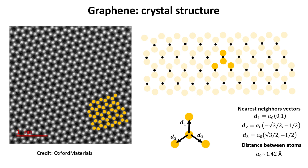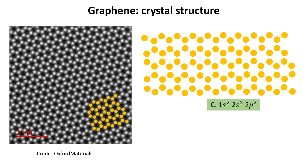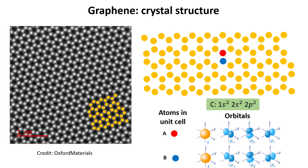The next step is to study the character of the orbitals involved in the construction of Bloch states for traveling electrons in graphene. The electronic configuration of each carbon atom is highlighted in the green box. The valence electrons occupy two s and two p states, which suggests that traveling Bloch waves in graphene have s and p character. Thus we consider an s and p basis to describe Bloch electrons in graphene, meaning that electrons can occupy s, px, py, or pz states in each carbon atom in a given unit cell.